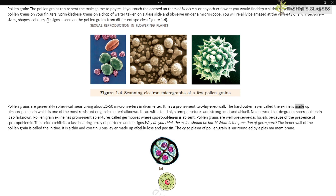The pollen grain has a prominent two-layered wall. The hard outer layer called the exine is made up of sporopollenin, which is one of the most resistant organic materials known. It can withstand high temperatures and strong acids and alkalis. No enzyme that degrades sporopollenin is so far known. The exine has prominent apertures called germ pores where sporopollenin is absent. Pollen grains are well preserved as fossils because of the presence of sporopollenin, and the exine exhibits a fascinating array of patterns and designs.